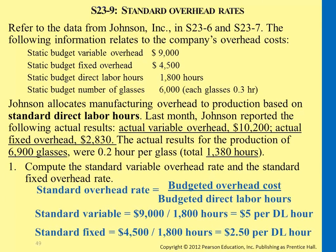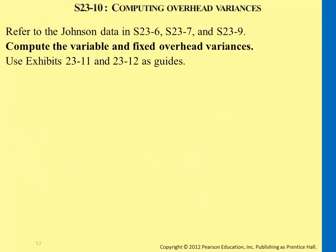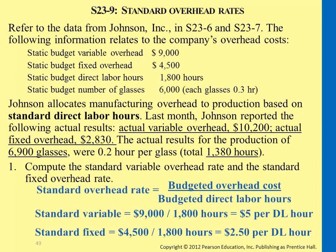The next question is variable variance and also fixed variance. Using this same data, you have the standard price here — we also have $2.50. If you're trying to calculate variable overhead variance and fixed overhead variance, referring to this, what would be the process?